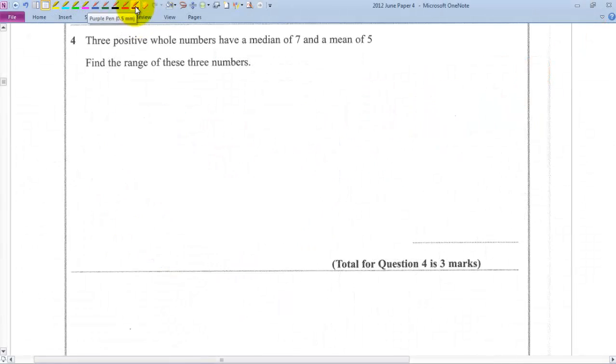Okay, in question 4, we have three positive whole numbers that have a median of 7 and a mean of 5. Find the range of these three numbers.